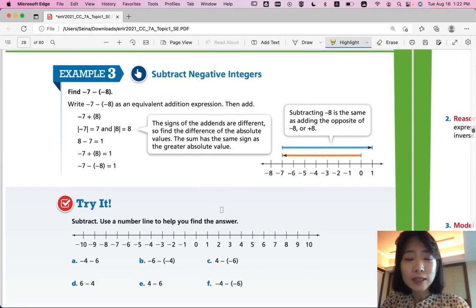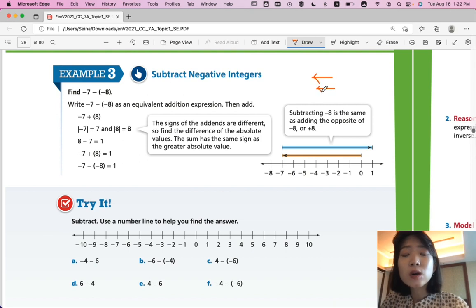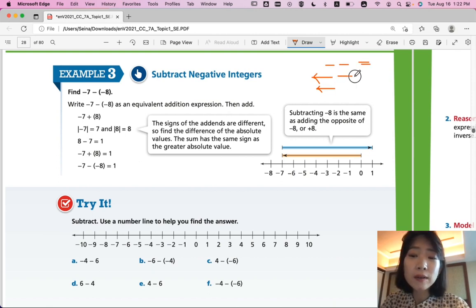Find negative 7 minus negative 8. How would you subtract a negative number? You're going to write negative 7 minus negative 8 as an equivalent addition expression. Subtracting a negative number is when you change. So, when you subtract, you go left. But if you're adding negative number, you also go left. So, if you're subtracting a negative number, that becomes, you're going to change your direction going left and then going right. You're going to change your direction from here to there. So, it becomes positive when you change it to an addition.